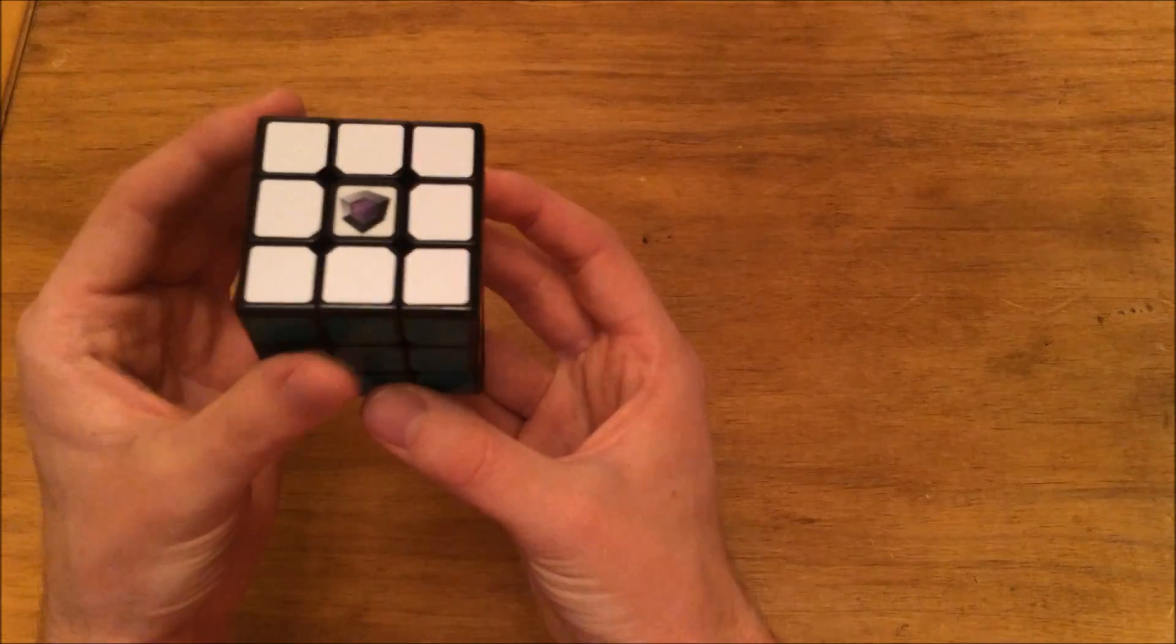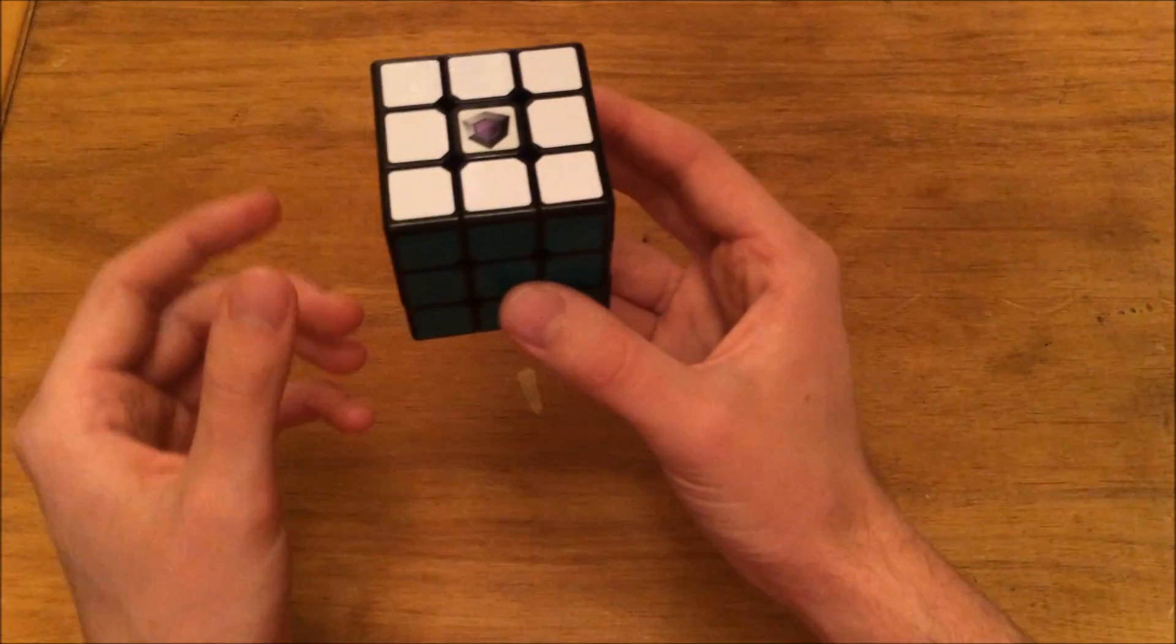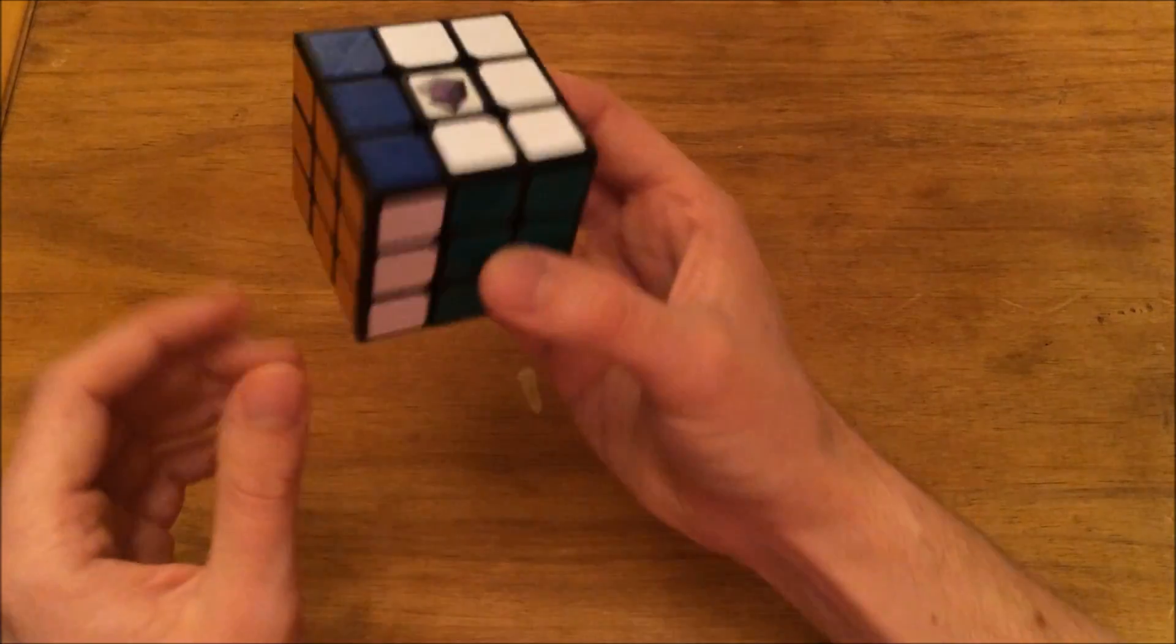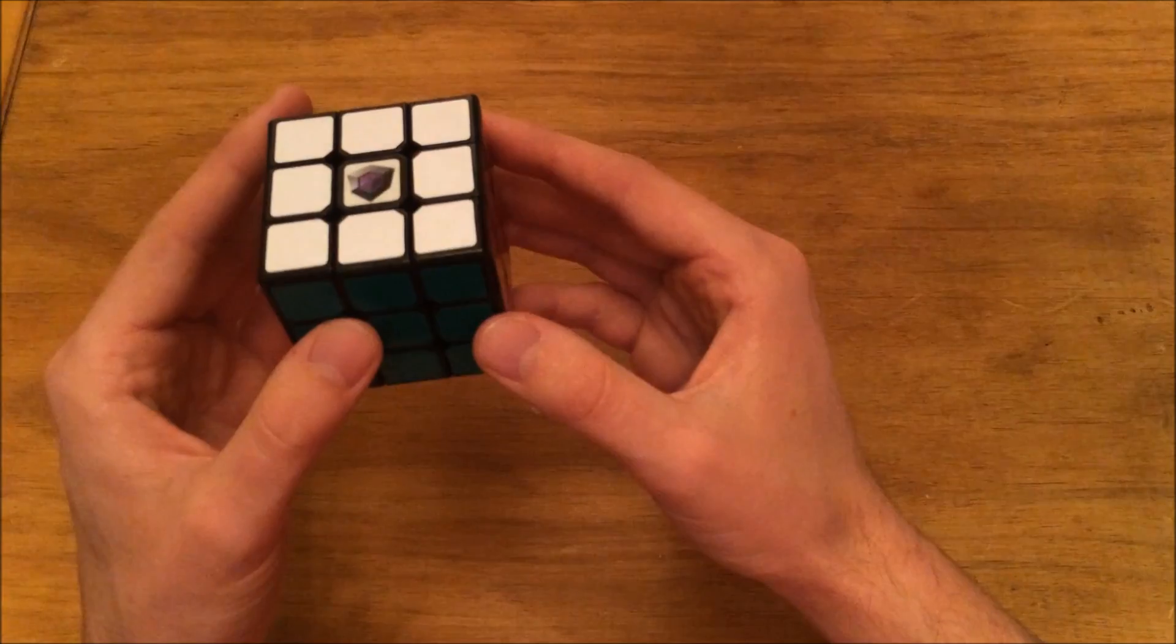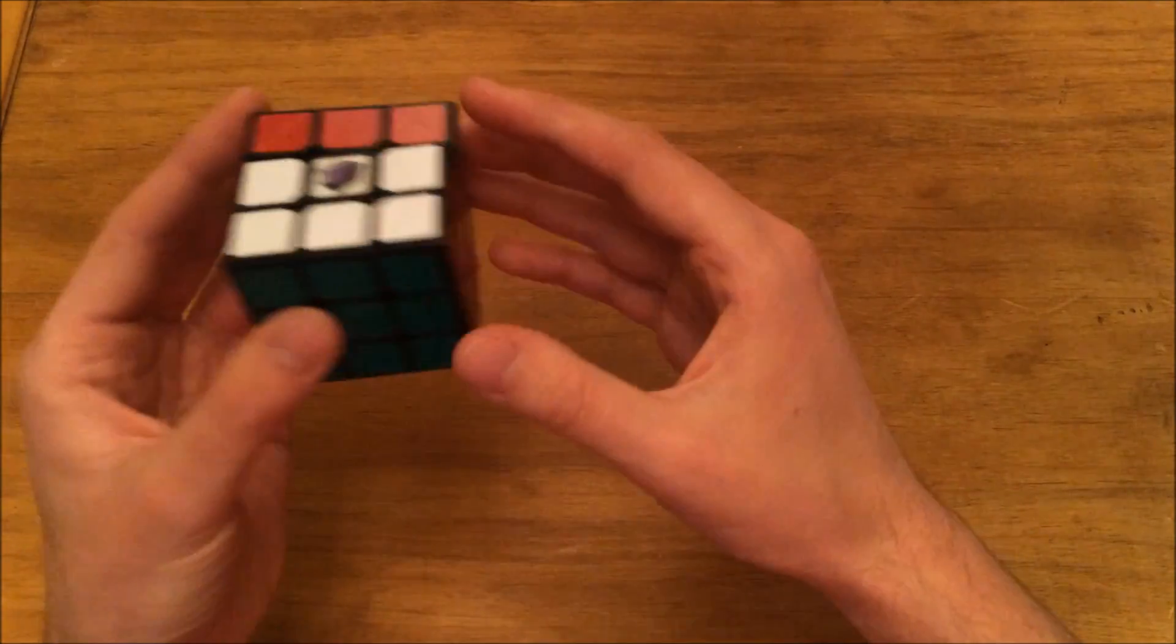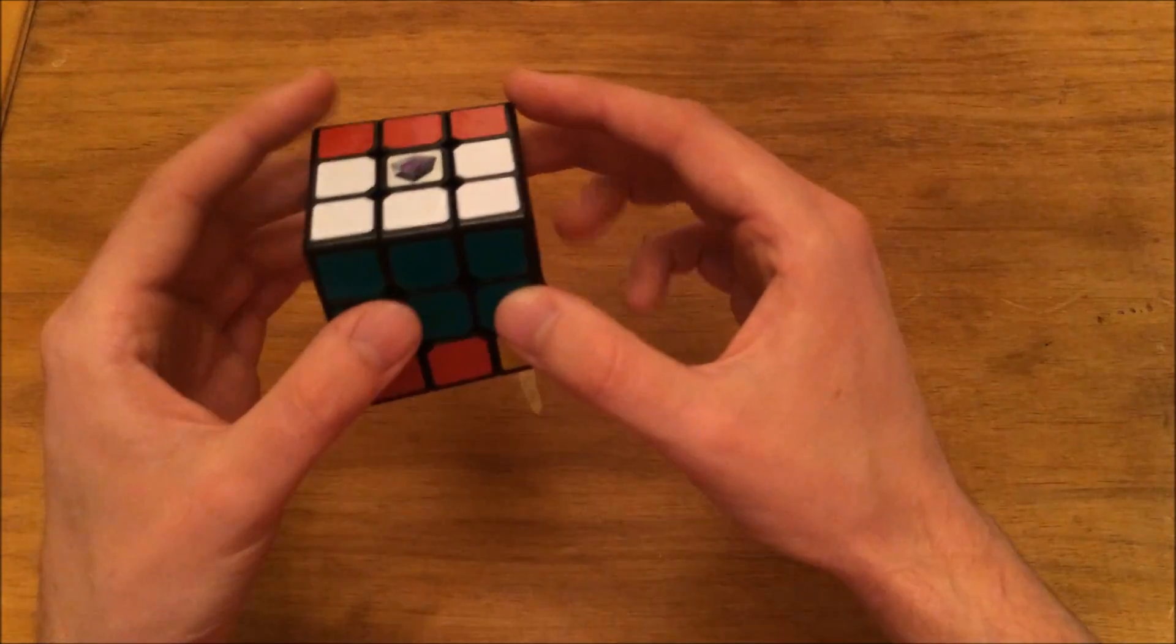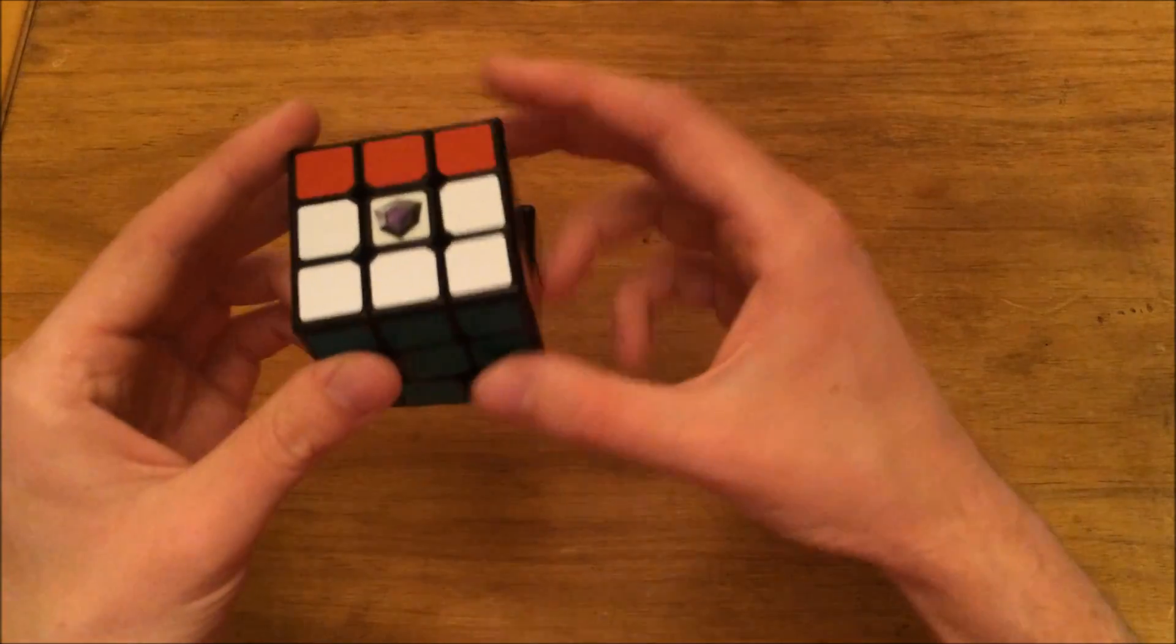So when you're first starting, you can just take a look at the cube and be like, oh, I need to do an L move. Turn it, do your L move, and then turn back. That way you know you did it. When you start getting more practice, you can learn how that's a B and that's a D prime down there, and you can start using almost finger tricks for that.